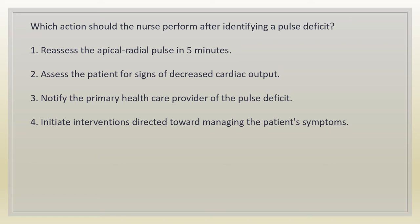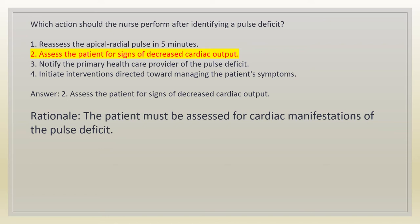Which action should the nurse perform after identifying a pulse deficit? 1. Reassess the apical-radial pulse in 5 minutes. 2. Assess the patient for signs of decreased cardiac output. 3. Notify the primary health care provider of the pulse deficit. 4. Initiate interventions directed toward managing the patient's symptoms. Answer: 2. Assess the patient for signs of decreased cardiac output. Rationale: the patient must be assessed for cardiac manifestations of the pulse deficit.